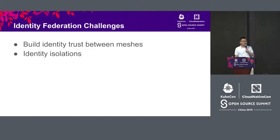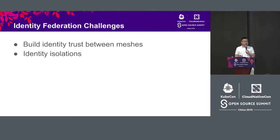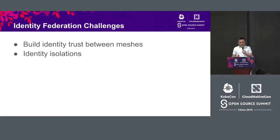There are many challenges in Service Mesh Federation: Identity Federation, Service Discovery Federation, and Observability Federation. For this presentation we are mostly focusing on Identity Federation. There are two fundamental challenges. First, we need to build trust between meshes — when you receive a request from another mesh, how do you trust the identity so you can apply the appropriate policy to give it the right privileges? Second, identity isolation — I don't want the other mesh to issue the same identity as one in my mesh, otherwise it can easily initiate an impersonation attack.